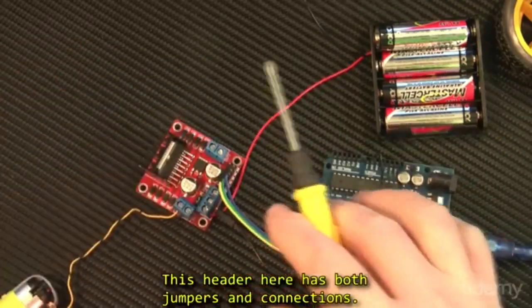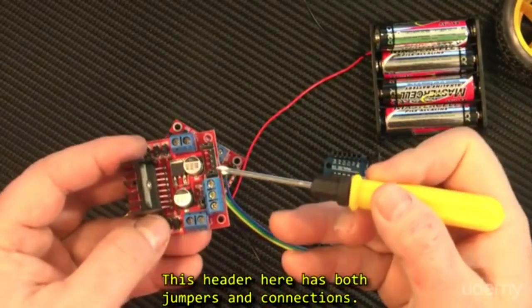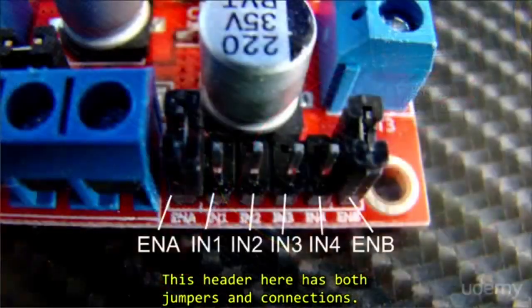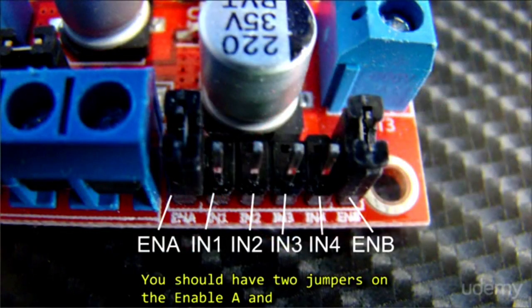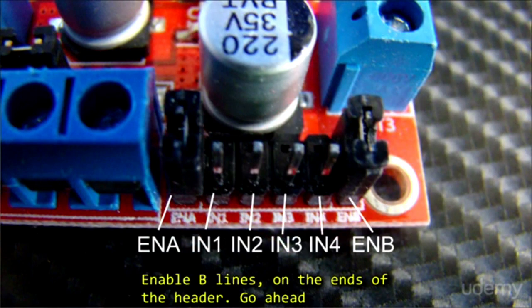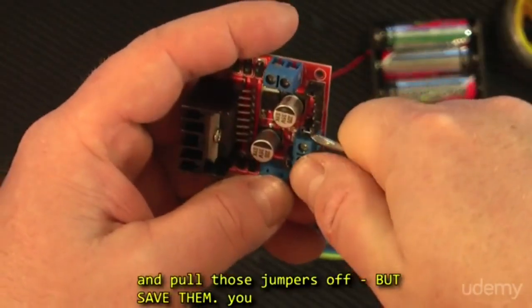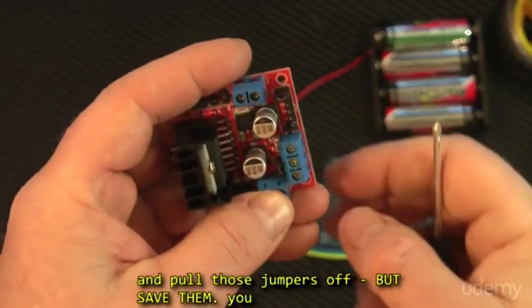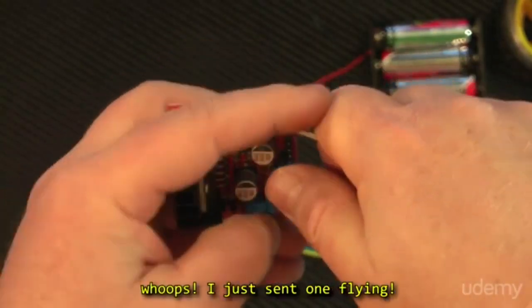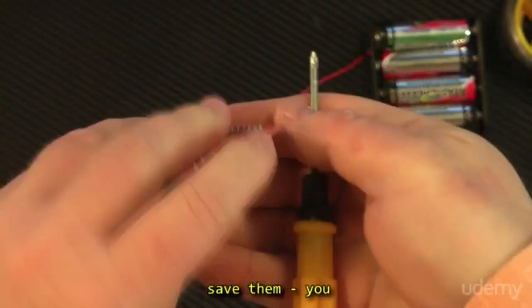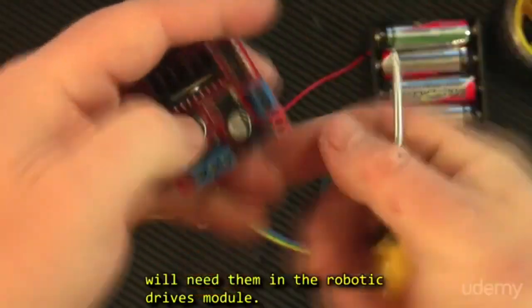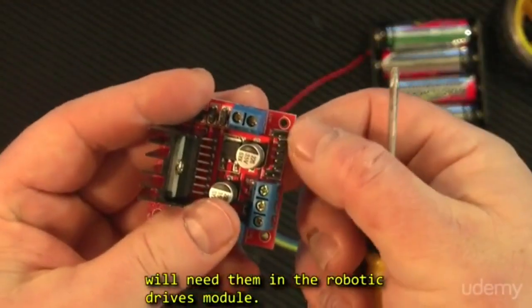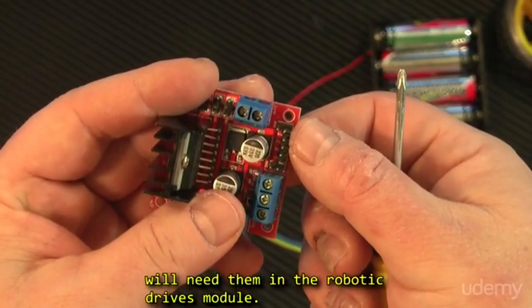So this header here has both jumpers and connections. You should have two jumpers on the Enable A and Enable B lines on the ends of the header. Go ahead and pull those jumpers off, but save them. You will need them to remove them for the robotic drives module.